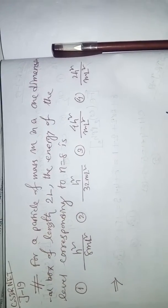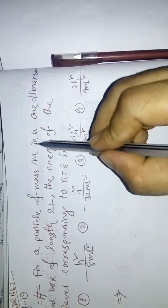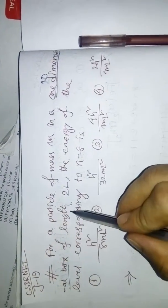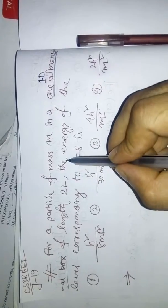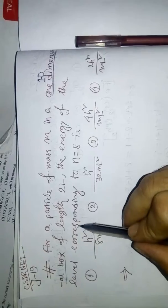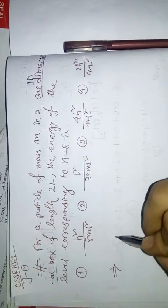Hello friends, this question is very easy about one-dimensional box. The question is: for a particle of mass m in a one-dimensional box of length 2L, the energy of the level corresponding to n equal to 8 is? And four options are present, which one is correct?